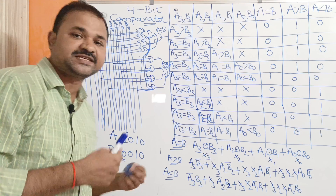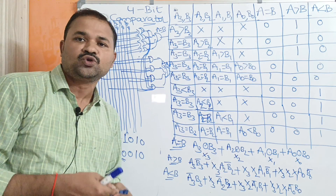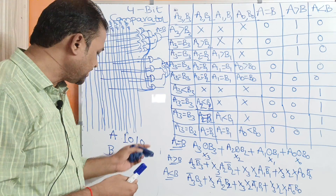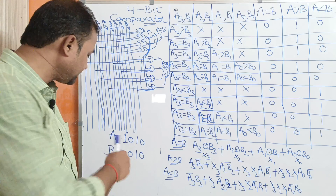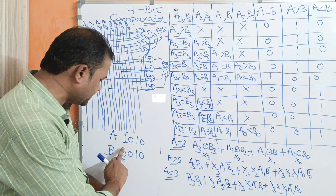If we take 1010, that is decimal number 10, and 0010, that is decimal number 2, then 10 is greater than 2, so we can say that 10 is the biggest number.